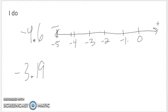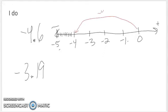So now I put in my tenths: one, two, three, four, five, six, seven, eight, nine — ten tenths is the next number, negative five. I find my space there. So what I really do is go to negative four and then go another negative six tenths: one, two, three, four, five — so it's to there. It's like I go negative four and then go negative six tenths, and I end up right there between negative four and negative five, but closer to negative five than negative four.